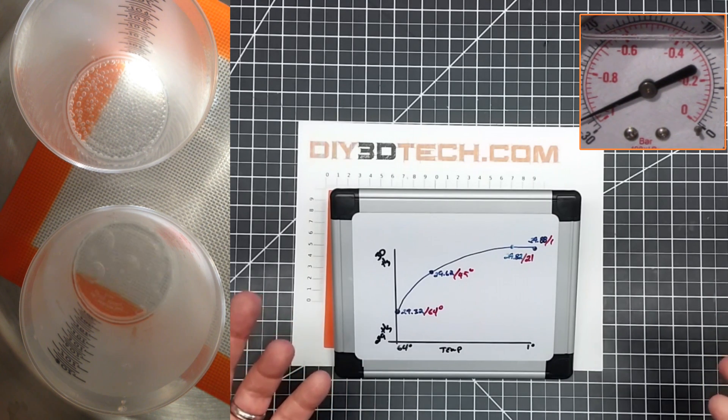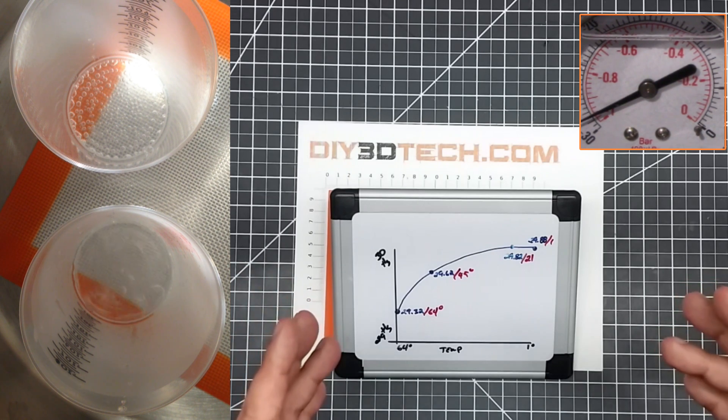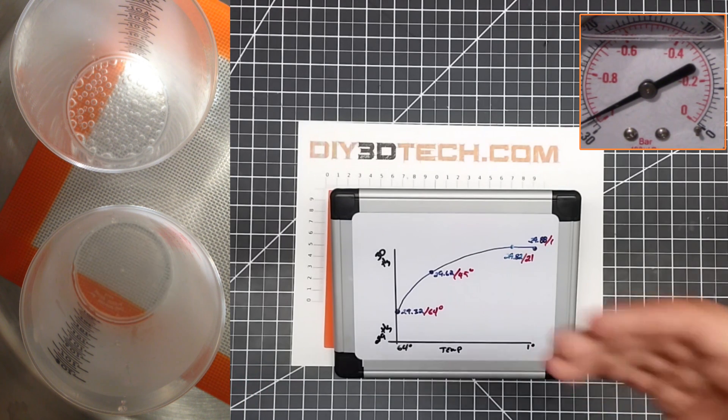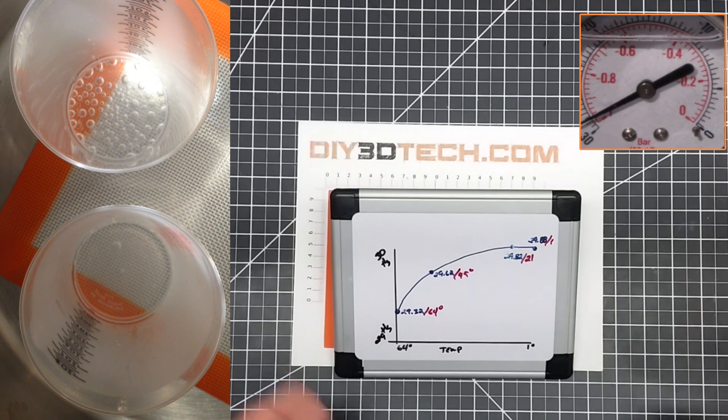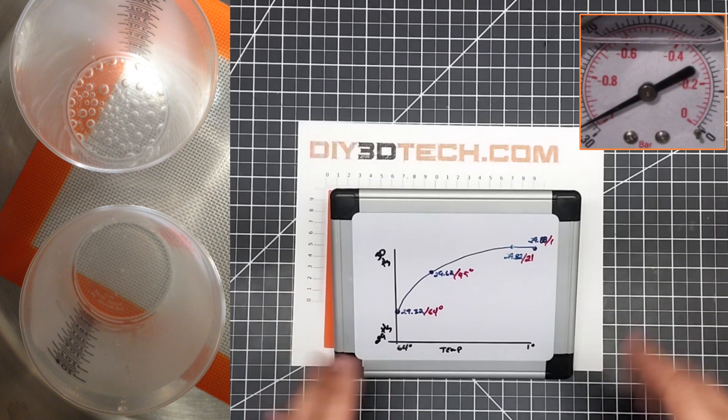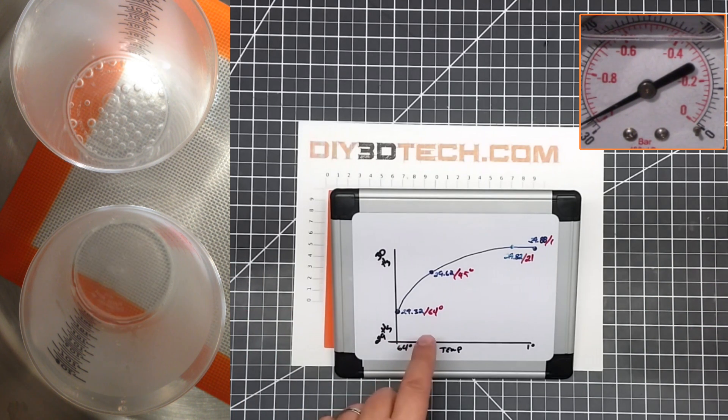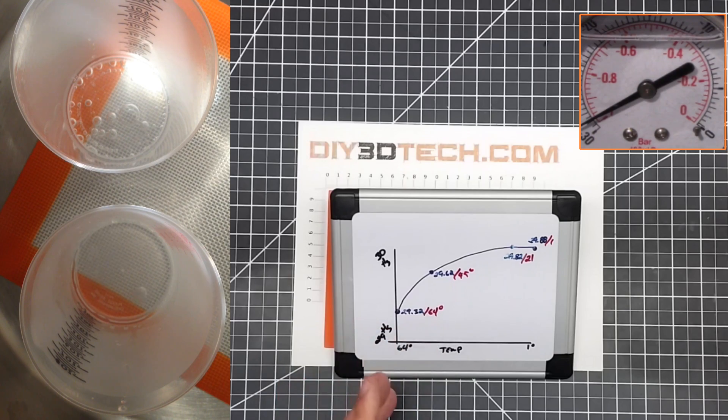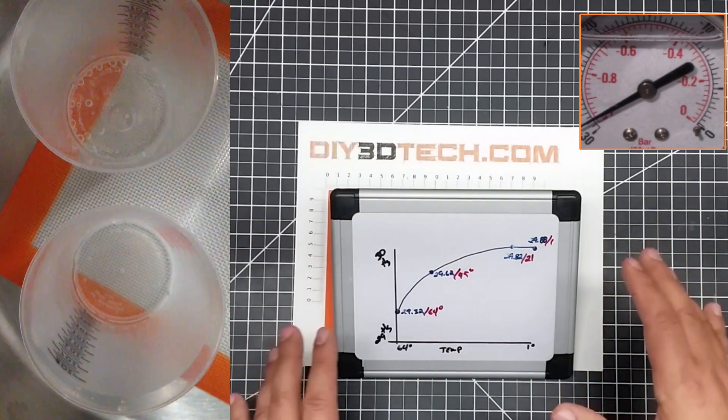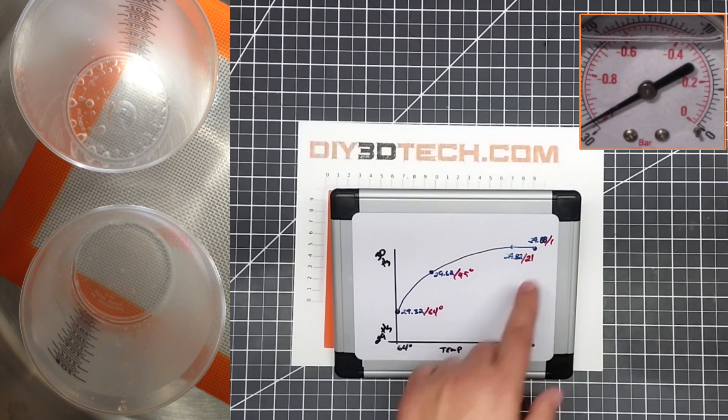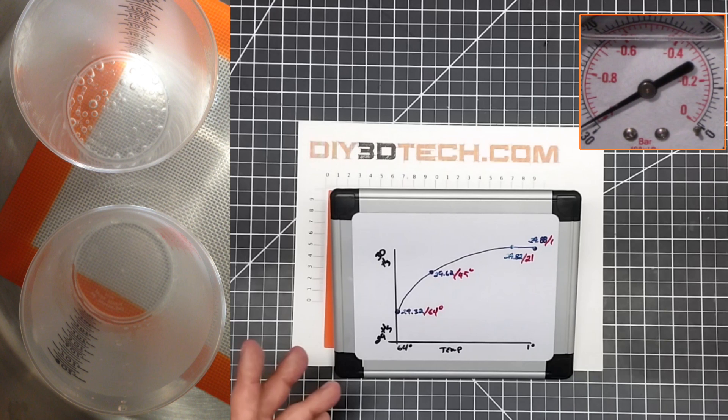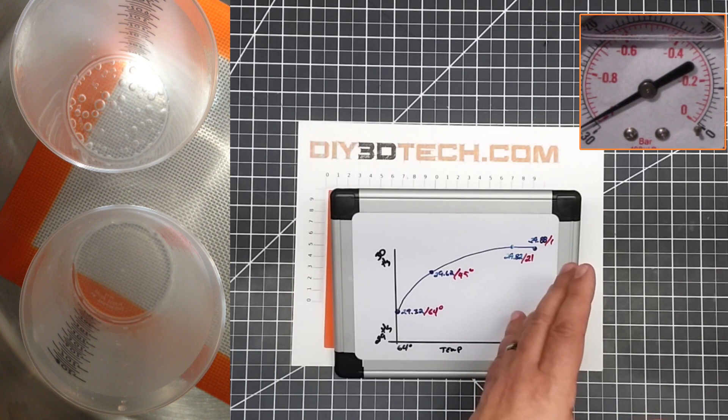Now the interesting thing is this vacuum system will pull to about the mid 29 fives, 29 sixes, between 29 and 30 inches of mercury is where the magic happens really with water. As you can see here in the graph, at 29.32 inches of mercury water will boil at about 64 degrees. This graph is not drawn to scale. Because if we go all the way up to 29.8, which is not far from 29.32, it'll boil at one degree Fahrenheit, so sub freezing. But we're not seeing those type of pressures.